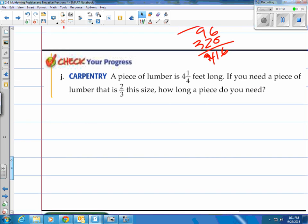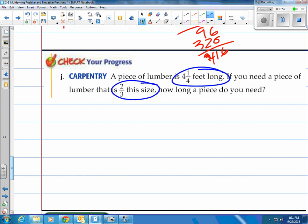You try this one. A piece of lumber is 4 and 1/4 feet long. If you need a piece of lumber that is 2/3 this size, how long a piece do you need? Well, it's this long to begin with. If you need a piece of lumber that is 2/3 this size, you're going to need to multiply 2/3 times 4 and 1/4 feet.